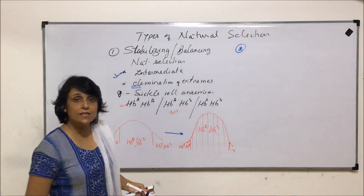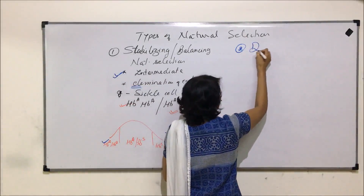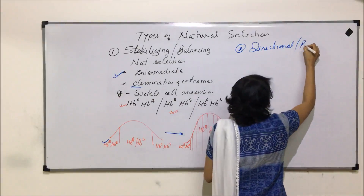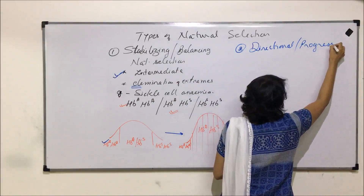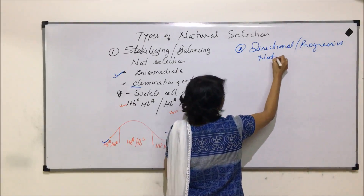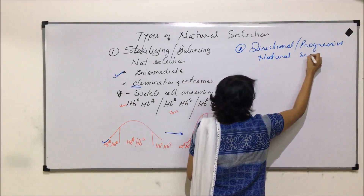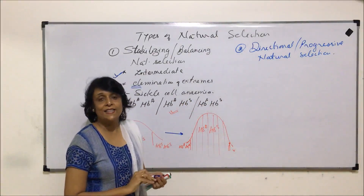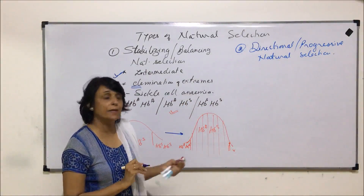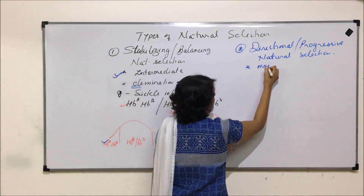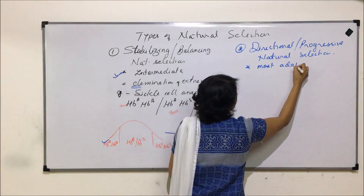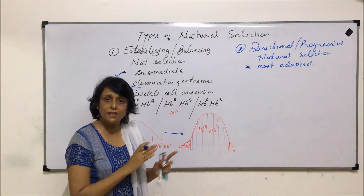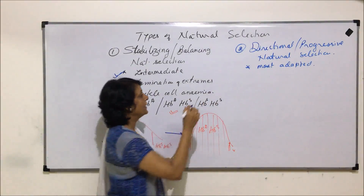The second type of natural selection is called progressive or directional natural selection. In this, nature selects the most adapted organism for a given situation, and the population shifts from one side to another — it moves in a direction.